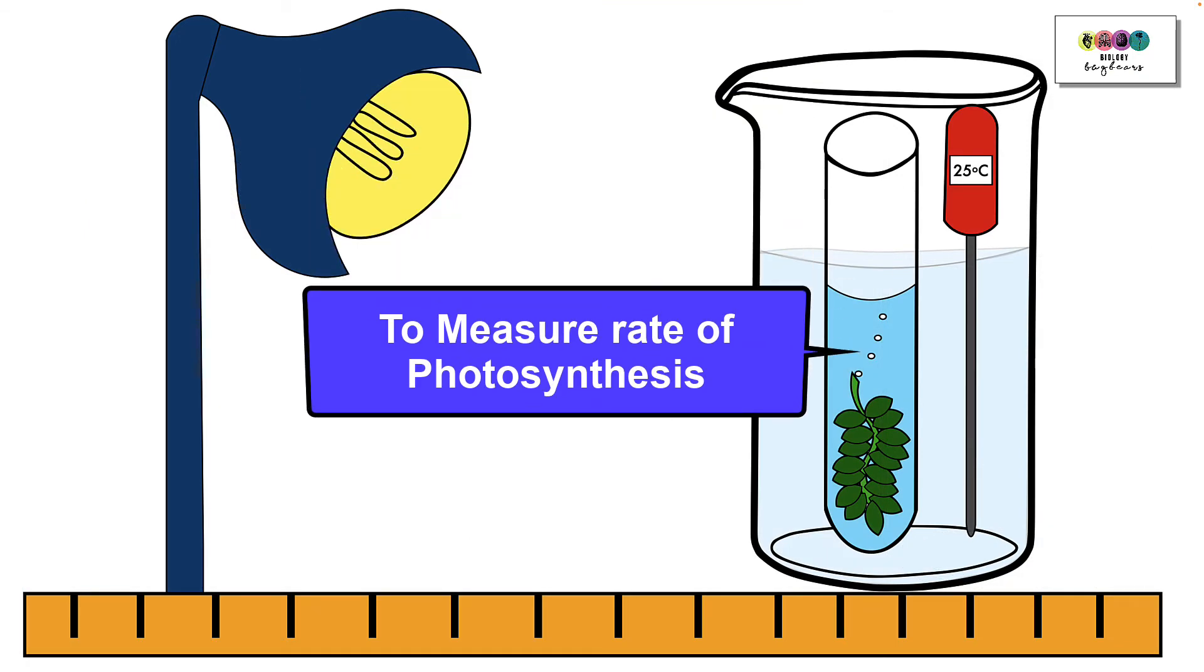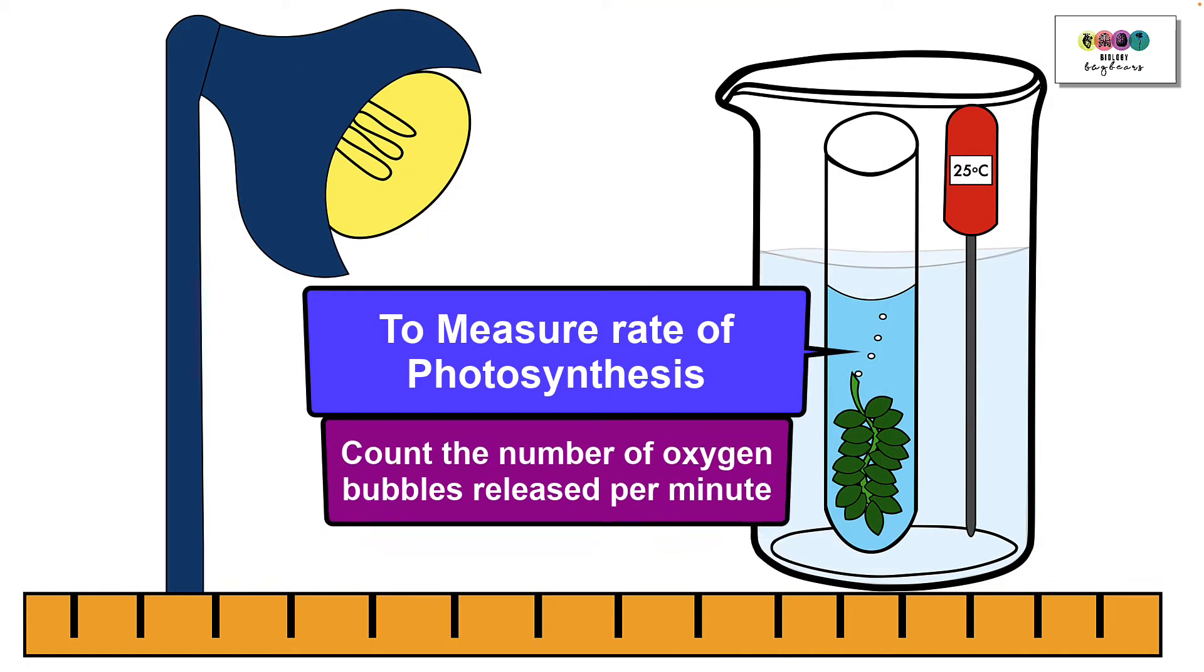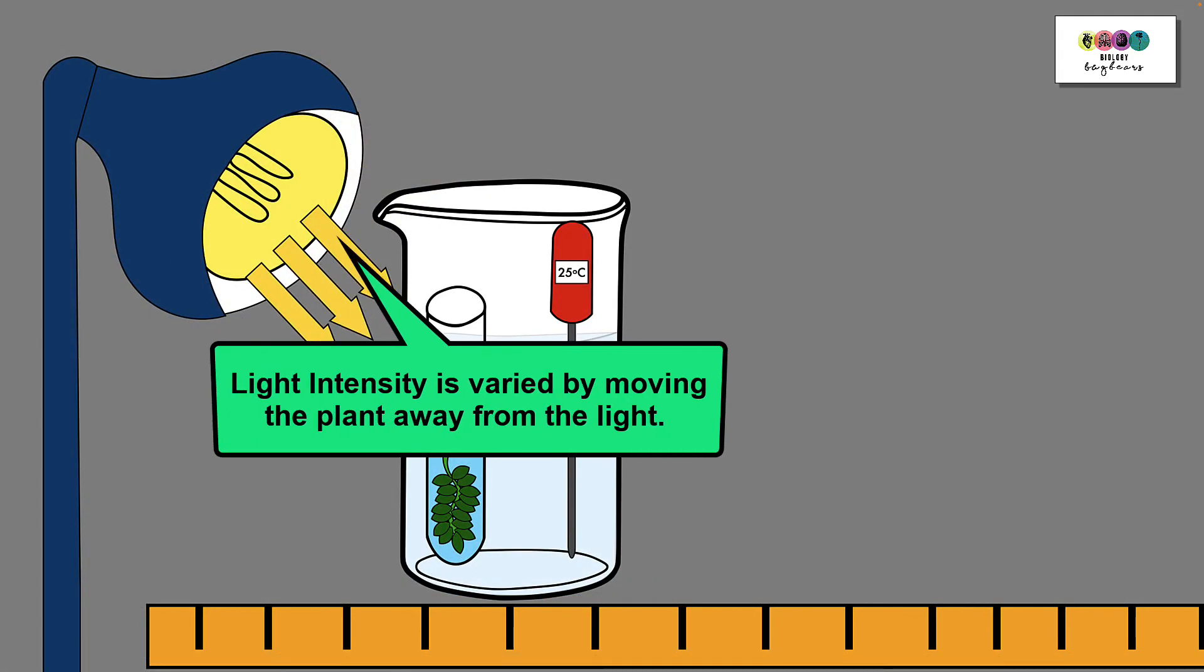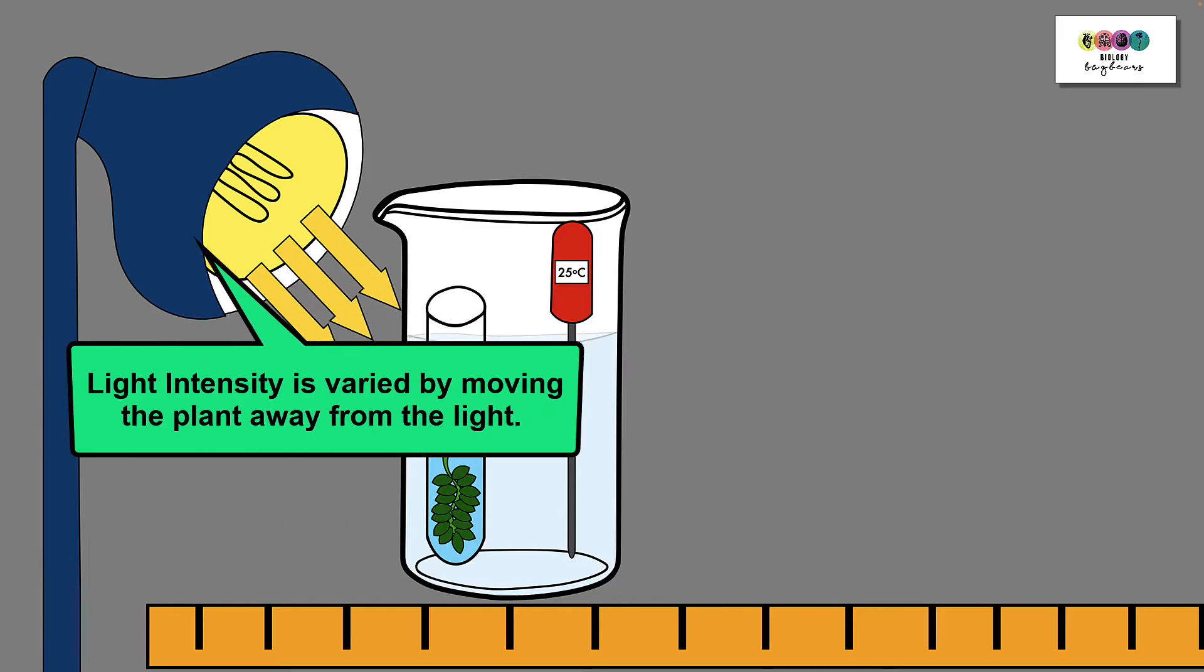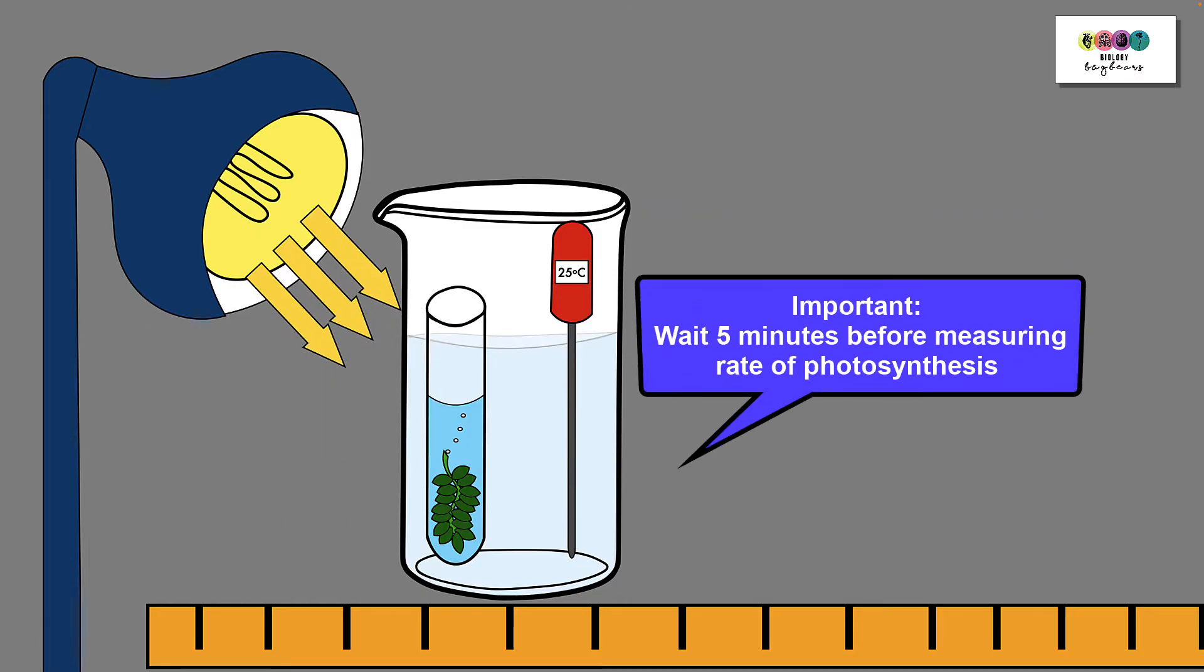So how are we going to measure the rate of photosynthesis? We're going to do this by counting the number of oxygen bubbles released per minute. Light intensity is altered by moving the plant fixed distances away from the light source. An important precaution is, every time the plant is moved to a new distance, we must wait 5 minutes before we start to count the oxygen bubbles. This is to let the plant adjust to the new light intensity.